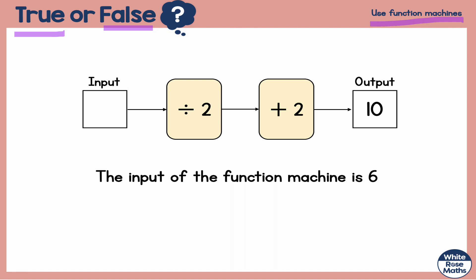If you're interested, I got this from the White Rose Maths scheme of learning and scheme of work. So the statement proposed: the input of the function machine is 6 when the output is 10.